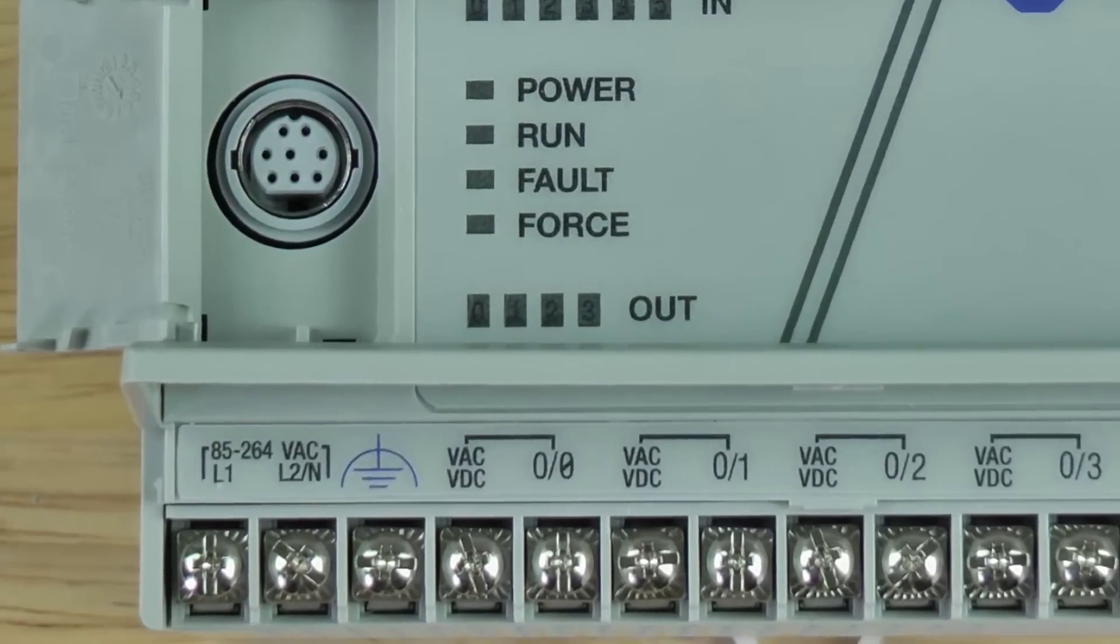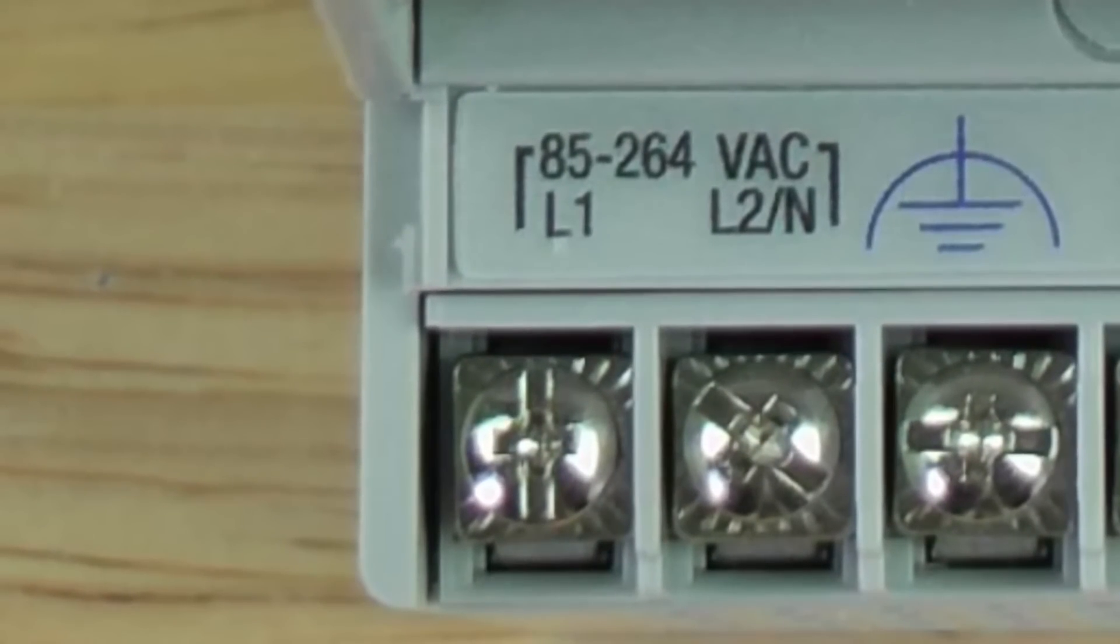Let's go ahead and zoom in. On the bottom left you can see that this is where you provide power to your MicroLogix PLC. Here, because I have an AC unit, you can see it's labeled L1, L2, and earth ground.